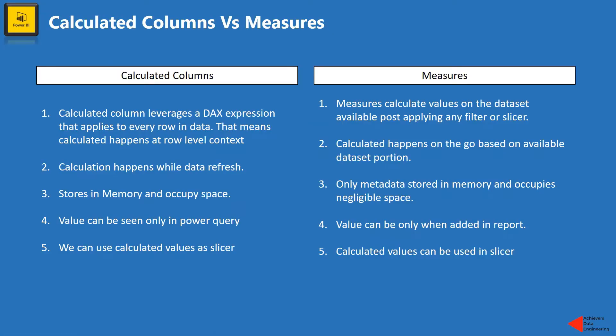Alright guys, so now let's talk about the actual difference between calculated columns and measures. So first of all, the difference between calculated columns and measures is their calculation method. Whenever we try to create a calculated column, it actually leverages a DAX expression that applies to every row in the data. So in simple words, we can say whenever we create a calculated column that DAX actually goes row by row.